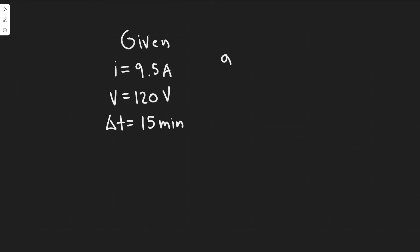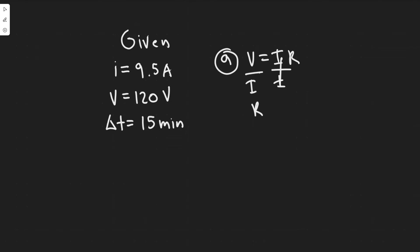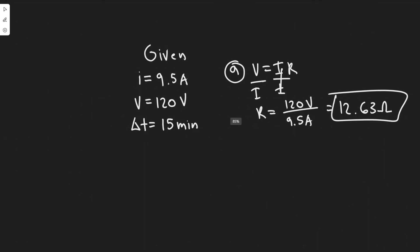Let's go ahead and start with Part A — what is the resistance? Since we're given voltage and current, we can use Ohm's Law, which is V = IR. We can solve for resistance by dividing both sides by I. So R equals the voltage, which is 120 volts, divided by the current. So 120 divided by 9.5 is 12.63. Using volts and amps, the standard units give us Ohms — so 12.63 Ohms is the resistance.